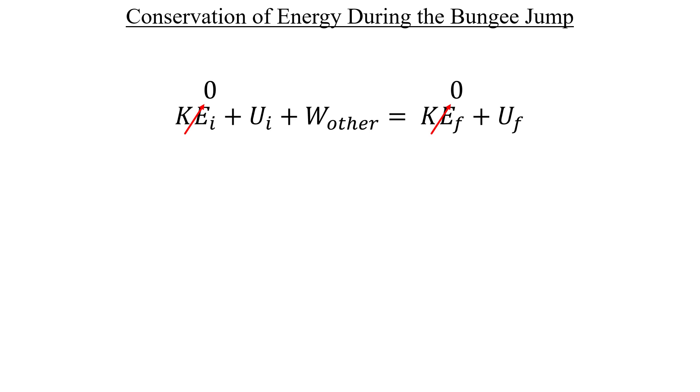Additionally, we said that the height at the bottom of the jump corresponds to a new final y value of 0. So therefore, the potential energy has to be 0 there as well.